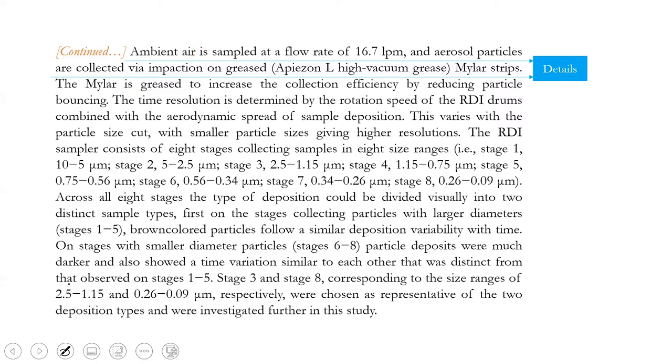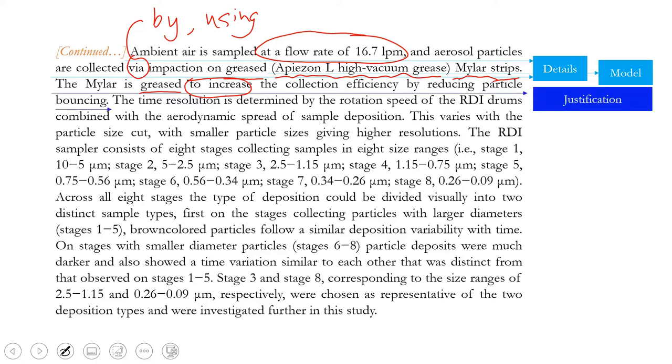Ambient air is sampled at a flow rate. When you mention flow rate, you give a number. And there are particles that are collected via, via means. You see, when you say grist, you tell what kind of grist is used. Then the Mylar is greased to increase. You see, to do something. So you explain that, and this is the justification.